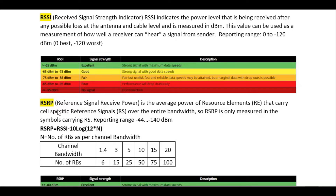The first parameter is RSRP, which stands for Reference Signal Receive Power. It is the average power of resource elements that carry the cell-specific reference signal over the entire bandwidth. RSRP is only measured in the symbol carrying the reference signal. Its reporting range is minus 44 dBm to minus 140 dBm. Its formula is: RSRP = RSSI − 10·log(12 × N), where N is the number of resource blocks per channel bandwidth.